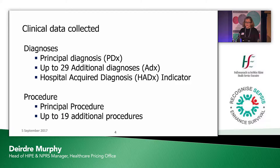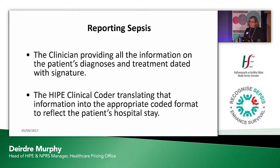We're talking about recognising sepsis across the different systems, right through from the patient right through to the data. Hype data can collect a principal diagnosis and up to 29 additional diagnoses. We also have a hospital-acquired diagnosis. We also collect procedures. But today we're just talking about those diagnoses. The clinician must provide all information on the patient's diagnosis and treatment and date it with a signature — this is what the coder needs in the chart. The Hype coder will then translate that information to a coded format to reflect that patient's hospital stay.